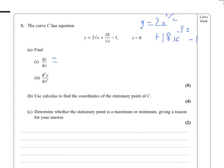So dy by dx then equals 2 times 1 half is 1x to the power minus 1 half. Then 18 times minus 1 half is minus 9x to the power minus 3 over 2 and the 1 disappears.